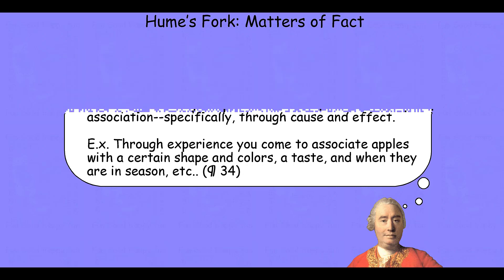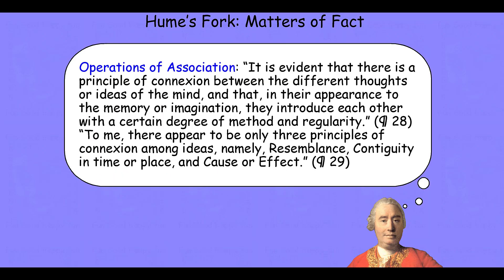Let's look more closely at the notion of an operation of association. We'll have to go back a bit before the beginning of our reading assignment. In paragraph 28, Hume tells us it is evident that there is a principle of connection between the different thoughts or ideas of the mind, and that in their appearance to the memory or imagination they introduce each other with a certain degree of method and regularity. To this he adds in paragraph 29: to me there appear to be only three principles of connection among ideas — namely resemblance, contiguity in time or place, and cause or effect.